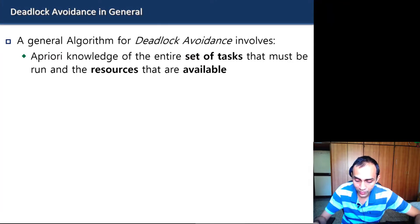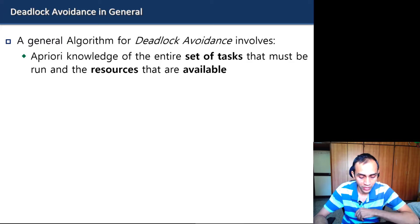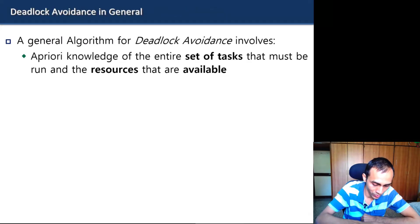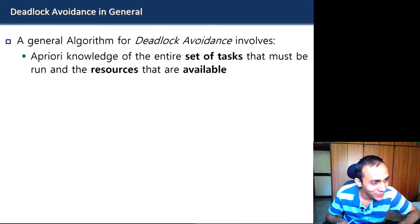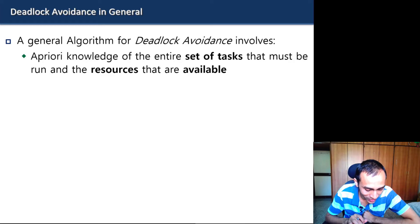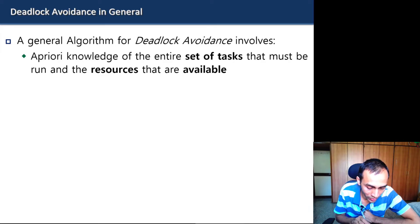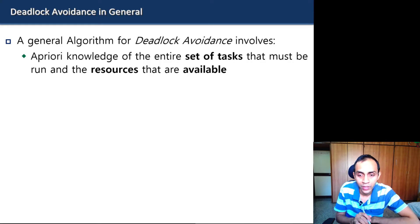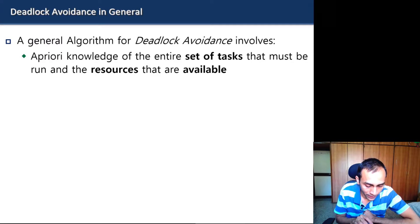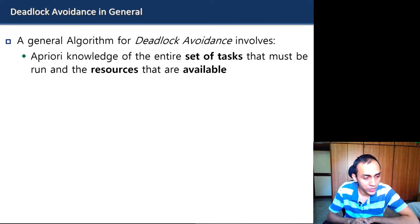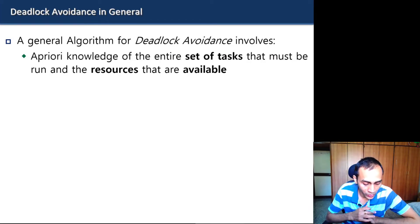Deadlock is one of the hardest problems — there is no perfectly clean solution. There is a lot of research in this area. Another general algorithm based on the idea of scheduling requests in a particular order was given by Dijkstra: the Banker's Algorithm. It is not covered in the primary textbook due to its low practical utility for concurrent programs, but it appears in other OS books and in exams, so it will be covered here.